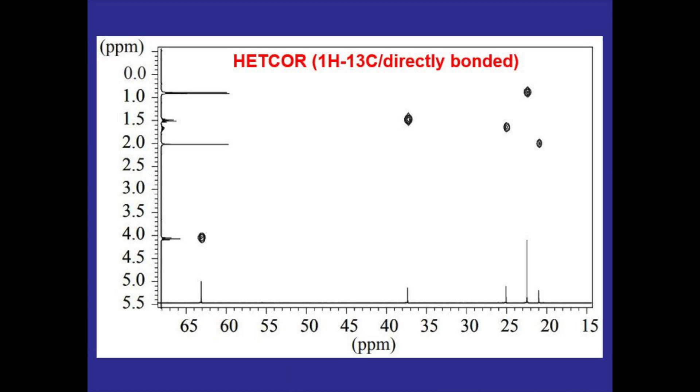This 2D NMR is different from the one that we've seen before which is called a hetcore and it shows coupling between hydrogens and the carbons that they are directly bonded to. So on one axis we have the HNMR and on the other axis we have the carbon NMR and these spots show the coupling between the hydrogens and the carbons they're directly bonded to.